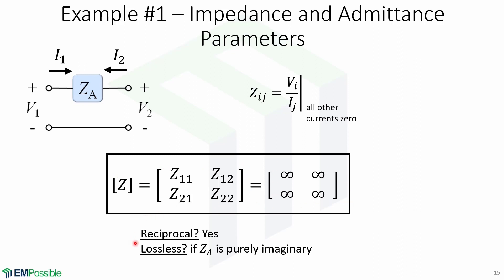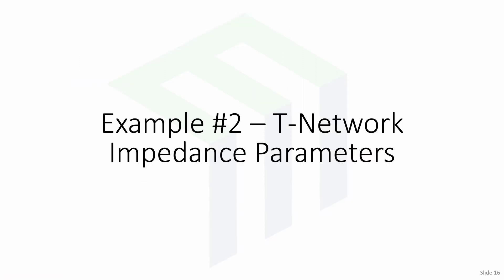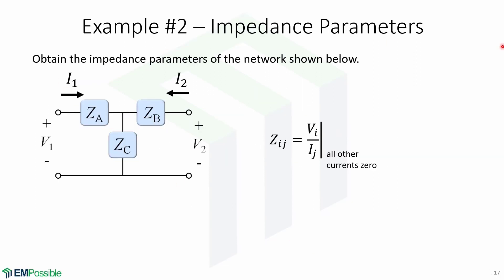Now we will look at some properties. Here is a more entertaining example. We will obtain the impedance parameters of the T-networks shown here. Recall that the impedance element Zij equals Vi over Ij when all other currents are 0.